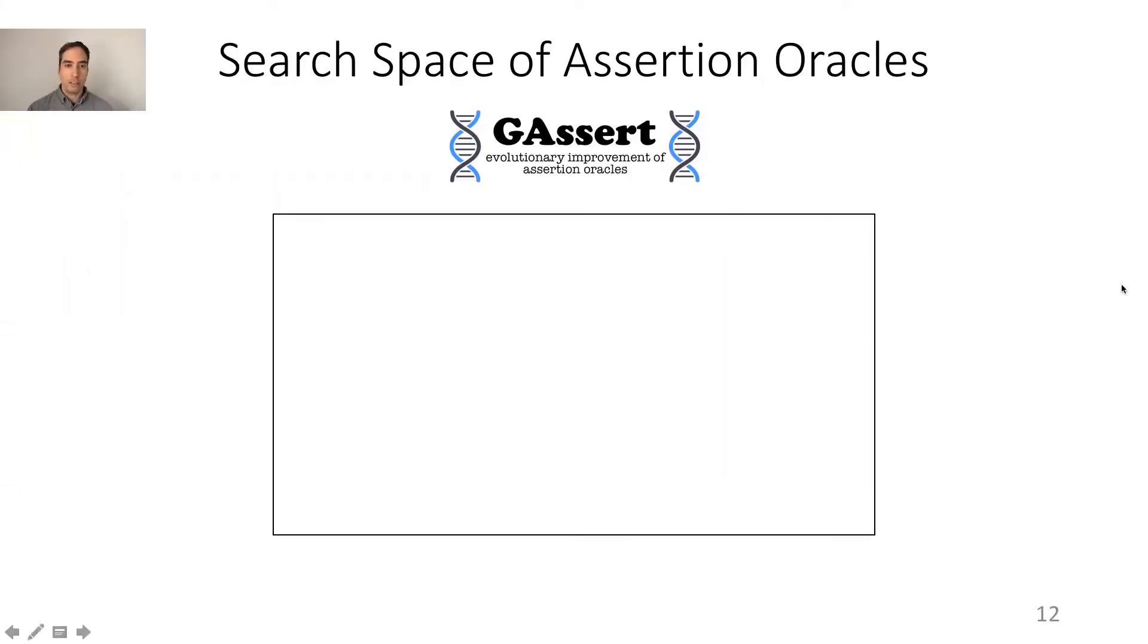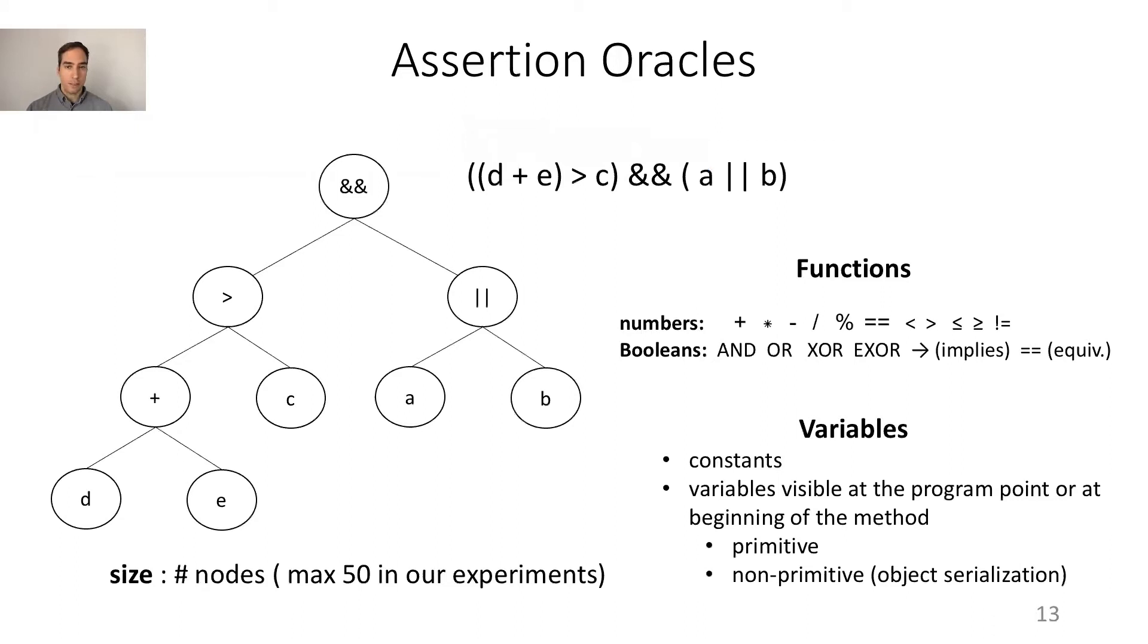Internally, J-Assert explores the space of possible assertion oracles and returns the one that has zero false positives and the lowest number of false negatives. We represent assertions as rooted binary trees. The size of an assertion is the number of nodes in the tree. We use 50 as the maximum size.